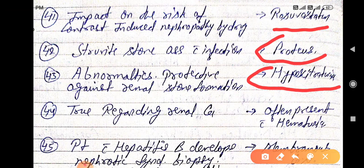True regarding renal cancer. Often present with hematuria. Renal CA, it's renal carcinoma, often presents with hematuria.